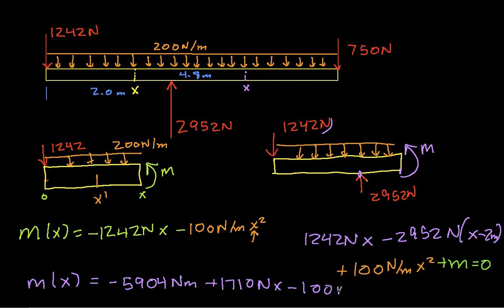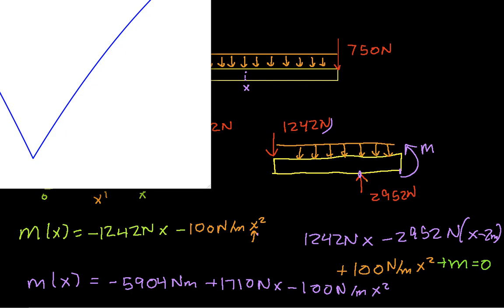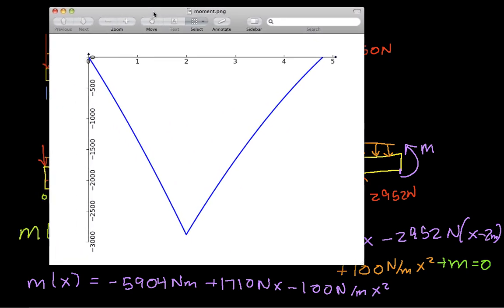Again, this is the graph of a parabola. It looks something like this: all of the moments here are negative, and between 0 and 2 meters I have part of a parabola going down, while between 2 meters and 4.8 meters it starts to go back up. Hopefully you found this useful, and this will conclude this video.